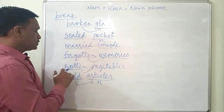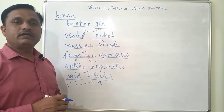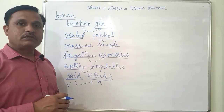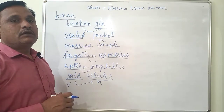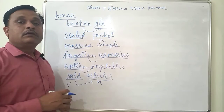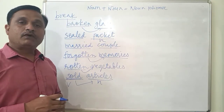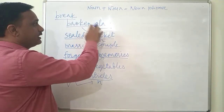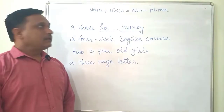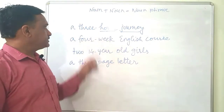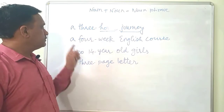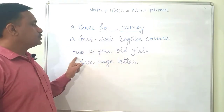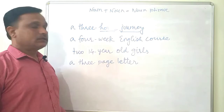So here we have seen that a verb with '-ing' qualifies a noun and acts as a noun, and a verb in the third form (past participle) also becomes a noun and can qualify another noun.